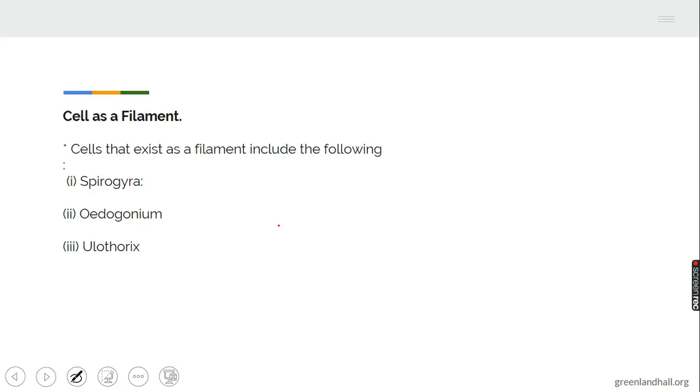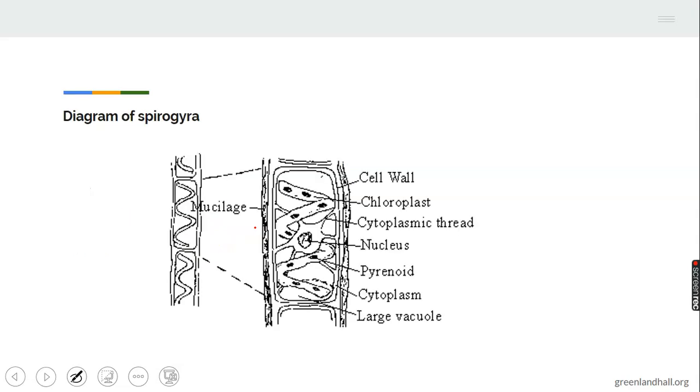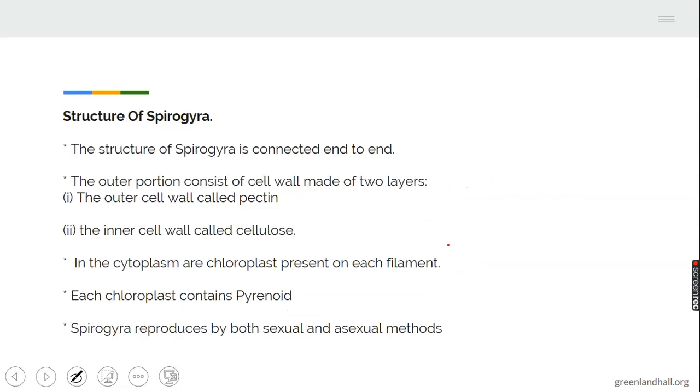Cell as a filament. Some cells exist as a filament. For example, we have the spirogyra or what we call the green filamentous algae. The diagram of the spirogyra is shown there. You can see the cell wall that makes it a plant, the chloroplast, a plant feature, the pyrenoid, the mucilage, and the controlling unit which is the nucleus. So you may be asked to give the plant feature of spirogyra. Just look at the structure.